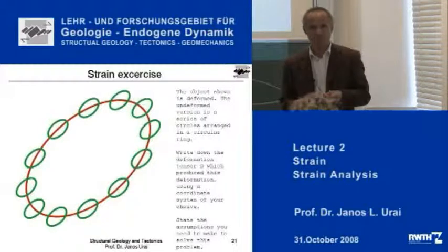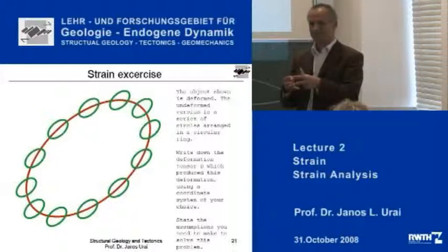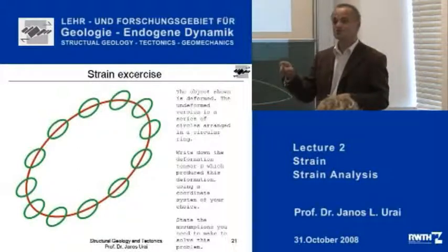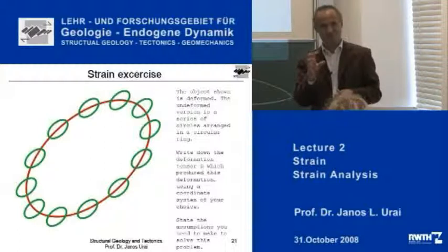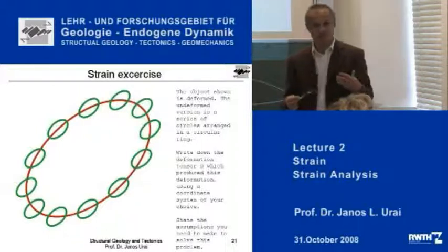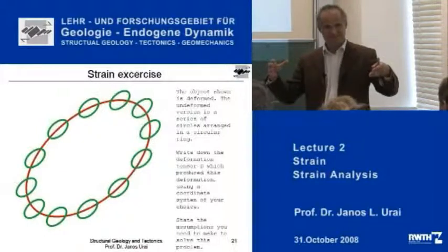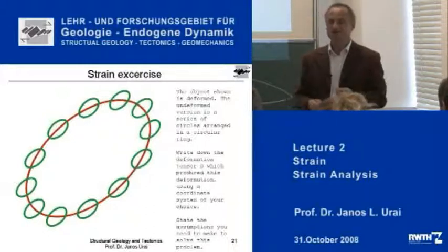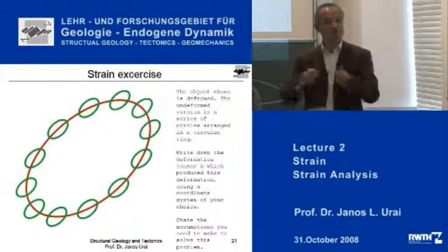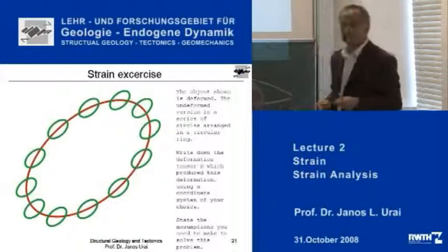The second assumption you have to make concerns the change in volume, or area in this two-dimensional case. If you say it used to be circular, you don't know how big the circles were — maybe the circles were small, maybe they were big. You can only make a determination or calculation of the D tensor if you know the determinant of this matrix, which gives you what the area change is. So if you assume there has been no area change, then you can make the calculation: it was stretched exactly the same amount as it was shortened in the other direction, and then you can calculate the components.